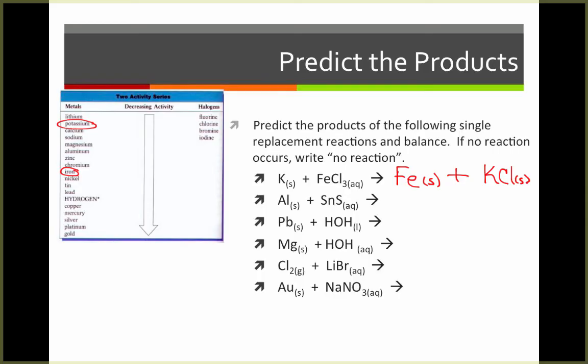Now we need to balance the equation. So I'll balance my chlorides by putting a three in front of KCl and my potassiums by putting a three in front of K. This is now a balanced single replacement reaction.